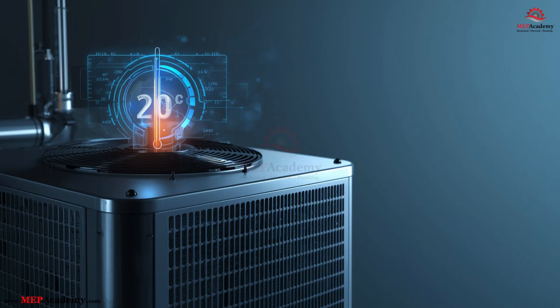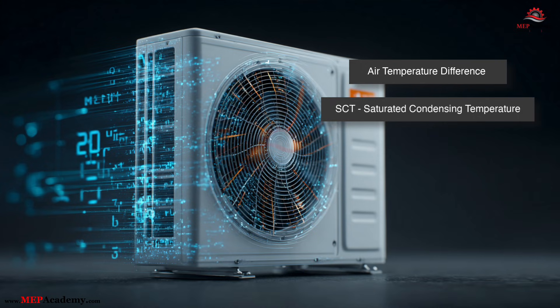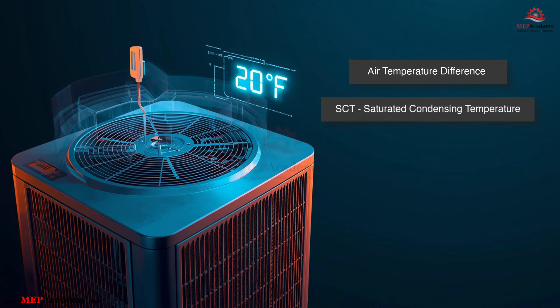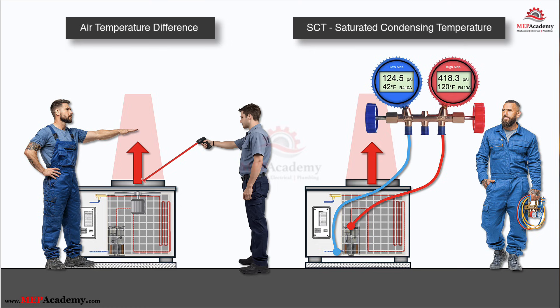When you're evaluating how well an AC condenser is rejecting heat, there are two common measurements technicians rely on: the airside delta T across the condenser coil and the saturated condensing temperature, or SCT, taken from the refrigerant pressure temperature chart. Both are valid diagnostic tools and both give you valuable information, but they measure very different things. Because of that, many techs confuse the two, or try to use one method to answer questions that belong to the other.